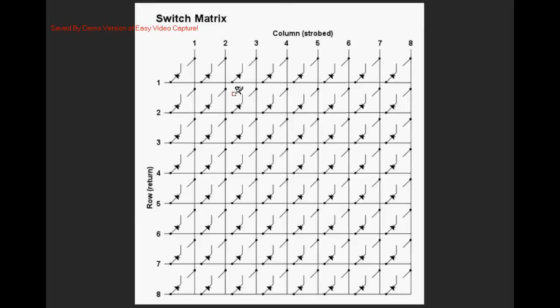The system will strobe or pulse across the columns dropping each one low sequentially starting with one moving across to the second column and so on until it has gone across all eight columns.